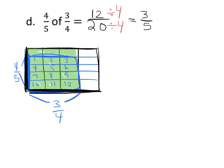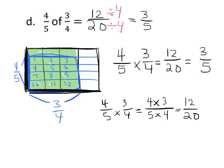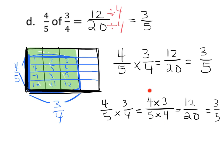So the answer is 3 fifths. And the way we would write that more appropriately: 4 fifths times 3 fourths is equal to 12 twentieths, which is equal to 3 fifths. So by now we want students to see that when we do 4 fifths times 3 fourths, that's really doing 4 times 3 for the numerator and 5 times 4 for the denominator. And that is where we get the 12 twentieths, then simplified to 3 fifths. The key point is: we're going to take the numerators and multiply them together, and we're going to take the denominators and multiply them together.